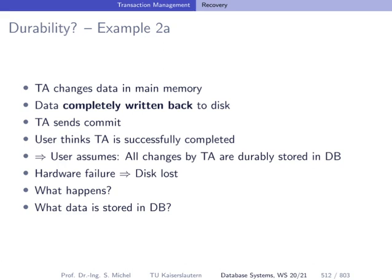Another example: a transaction changes data in memory and everything — all changed data — is entirely written back to disk. The transaction sends commit, the user thinks everything is fine because of the durability promise. Then the disk is lost due to a hardware failure. We promised durability but cannot really ensure it if we have only one disk and it breaks. The user will think everything is stored in the database, but it's not.